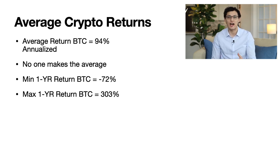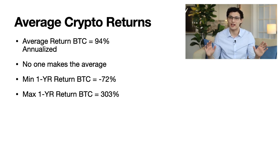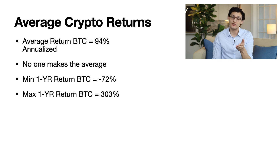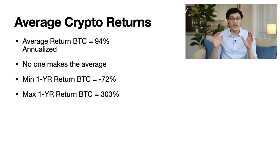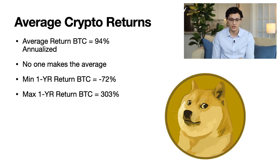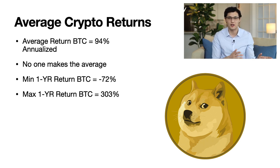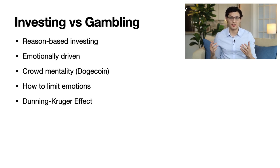If we look at the average return of Bitcoin on an annual basis, it makes around 94 percent on average annualized. But no one is actually making that average on a consistent basis unless they invested way back in the day and never made any trades. In fact, the minimum one-year return — Bitcoin's worst year ever — lost 72 percent of its value, and its best year gained 303 percent. Because of the high volatility in cryptos, it's really hard to talk about averages. Some coins like Dogecoin, between January 28th and 29th, grew around 216 percent in a single day — something you'd never see in the stock market.